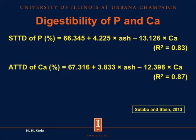We can also predict the digestibility of both phosphorus and calcium in meat and bone meal by knowing the concentration of ash and calcium. The standardized total tract digestibility of phosphorus in meat and bone meal equals 66.345 plus 4.225 times the concentration of ash, minus 13.126 times the concentration of calcium. Likewise, we can predict the apparent total tract digestibility of calcium by adding 67.316 to 3.833 times the concentration of ash and subtracting 12.398 times the concentration of calcium. Once again, the concentration of ash is important for predicting digestible nutrients in meat and bone meal.